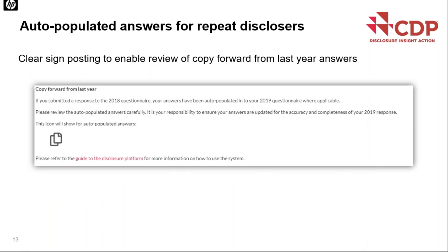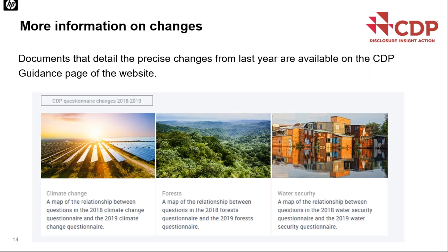Also new and requested for 2019 is auto-populating of answers — having answers from 2018 copied forward into the 2019 response where applicable. This will be identifiable with an icon, but make sure you review auto-populated answers carefully to ensure they are updated and accurate for the 2019 disclosure. If you want more information on the changes, the questionnaire change documents are on the CDP website, mapped for climate change, forests and water security.